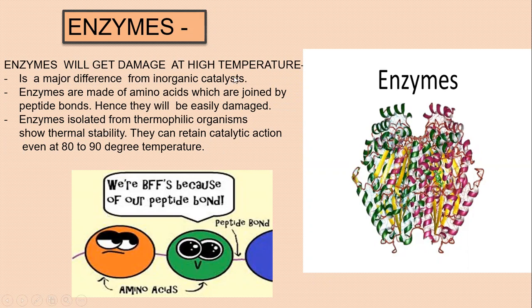Enzymes are damaged at high temperatures because of their protein nature — they are made of amino acids joined by peptide bonds. The protein exists in a tertiary structure, which is a globular level of protein structure, and it is this tertiary structure that allows the protein to act as an enzyme.